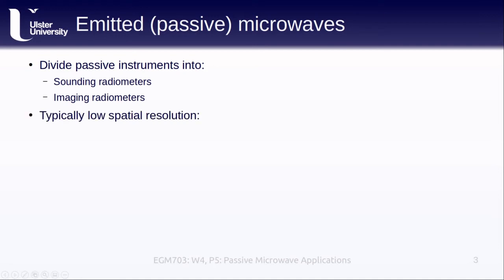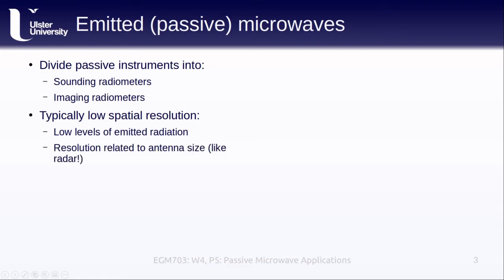The radiation emitted by an object in the microwaves is typically very low, and this means that the signal received tends to be very weak. Because the amount of radiation measured by the sensor is related to the size of the antenna, just like real aperture radar, we typically need to have an impossibly large antenna to get high resolution images. As a result, we're typically talking about ground sampling distances on the order of a few kilometers.